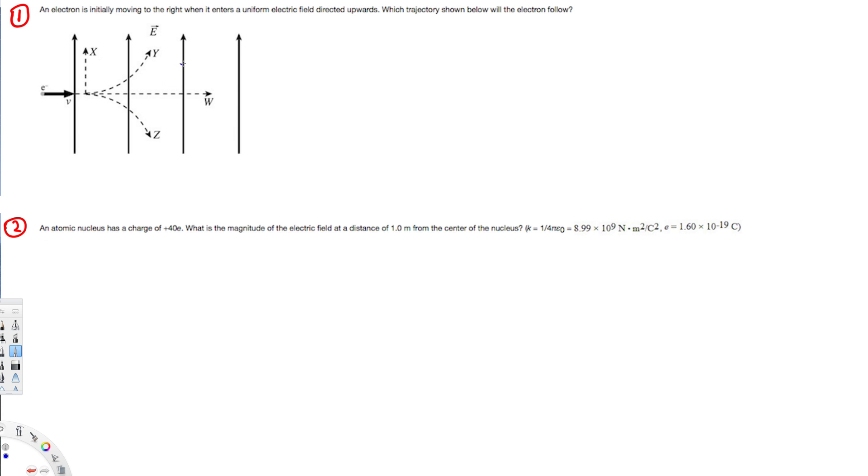Here they have mentioned that the electric field is directed upwards, right? So when the electron enters, it's going to feel the force opposite to that direction, so it means it's going to experience the force downwards. Therefore, the electron will go in the downward direction.